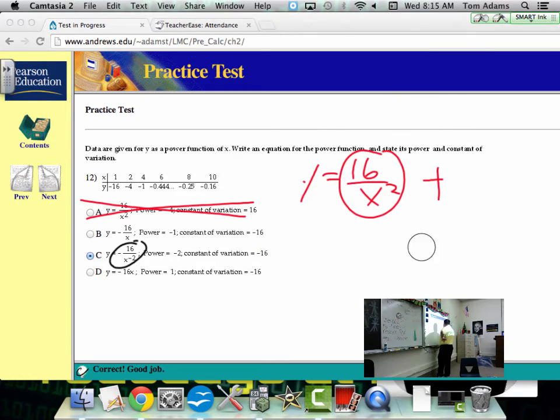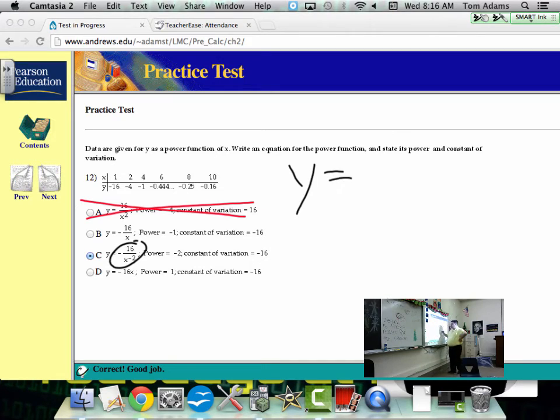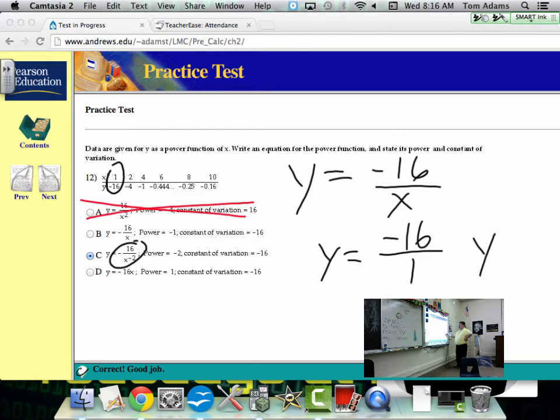So, we'll just cross a off the list. Now, let's do another one. B, I have y equals negative 16 over x. Plug in a number and check. If I choose x to be 1, does y equal negative 16? Yeah, this works. Let's pick another number. If I say y is equal to negative 16 over 4, does that work? When I plug in 4 for x? No. So, that's wrong.